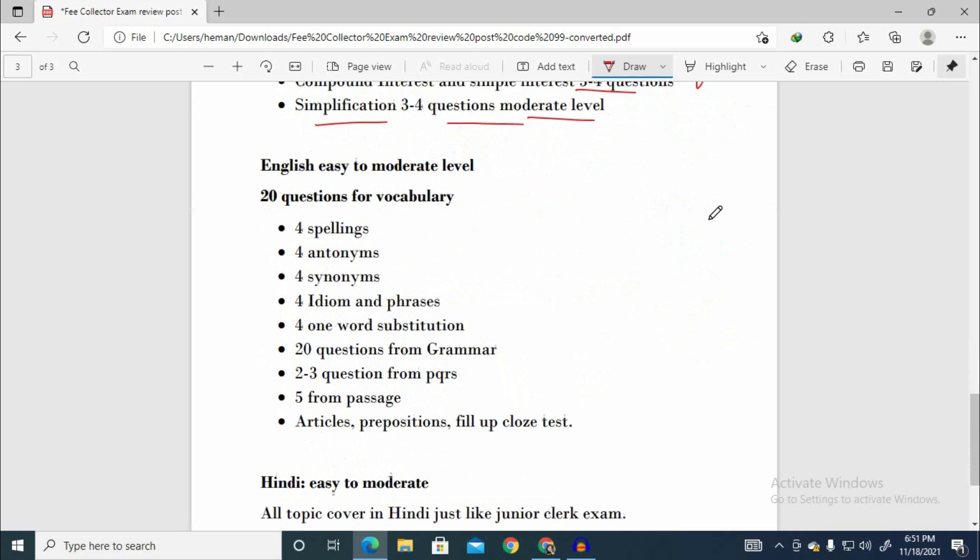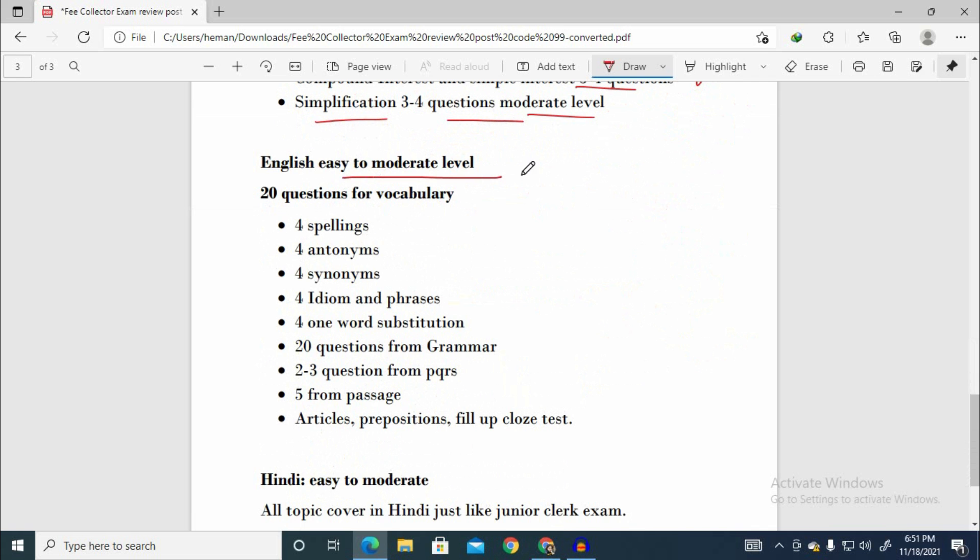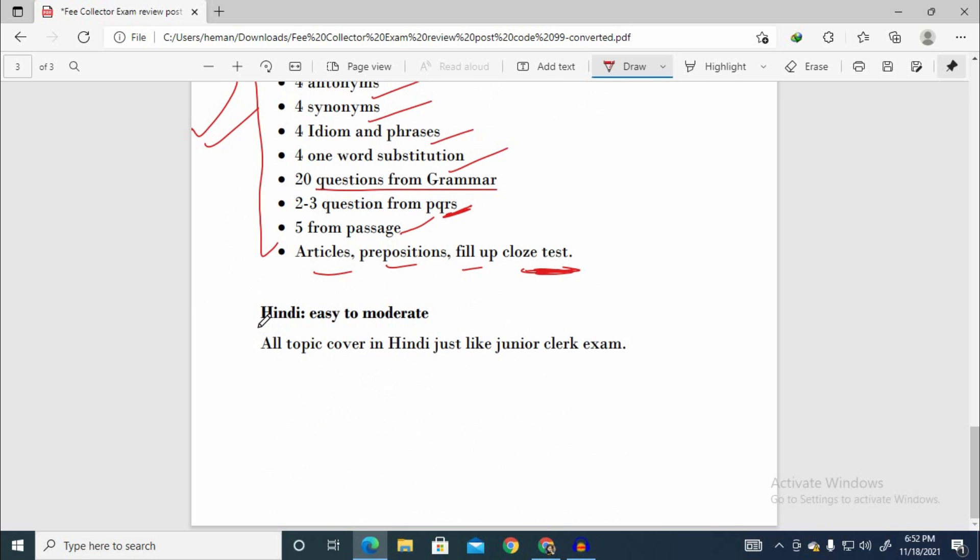Now let's talk about English. English was easy to moderate level, 20 questions total. Grammar 4, spelling 4, synonyms 4, one word substitution 2-3 questions, 5 questions on articles, preposition fill-ups, cloze test. English will be easy to moderate level but students will score well because English level is good. Now we'll talk about Hindi.